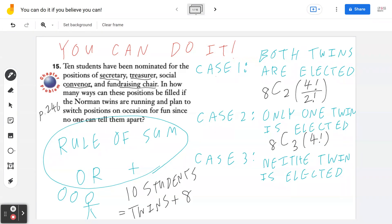Case number three, if neither twins is elected, this means you have eight remaining students, and you have to choose four of them where order matters. Why order matters? Because these are not just choose four different students. The four distinct roles. So this is eight permutation four. Permutation, order matters. Combination, order does not matter.